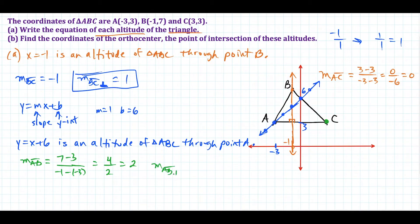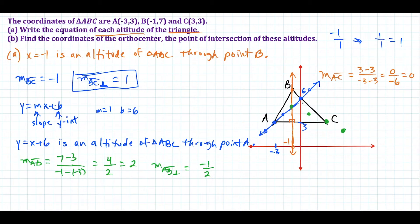So the slope of the line perpendicular to AB — we take the negative reciprocal of positive 2. Think of it as 2 over 1: flip it to 1 half, then change the sign to negative. So the perpendicular slope is negative 1 half. Using that slope of negative 1 half, we go down 1 to the right 2, or up 1 to the left 2. And notice the orange, blue, and green lines are all intersecting at the same point — that point of intersection is the orthocenter. Here is the last altitude drawn in.